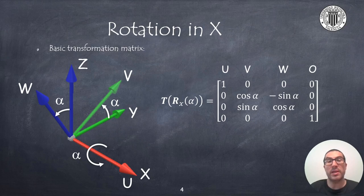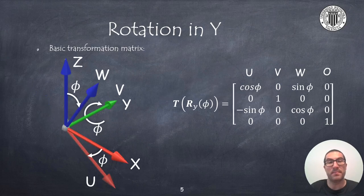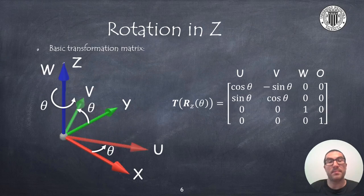Please note that in each of the rotation operations, the column and row related to the corresponding rotation axis is filled with zeros, except for the pivoting element which contains a one. Similarly, we can obtain the basic transformation matrices with respect to a rotation in y, and in the same way with respect to a rotation in z.